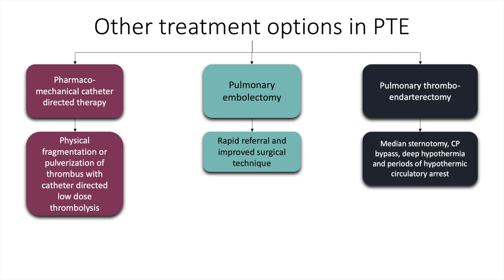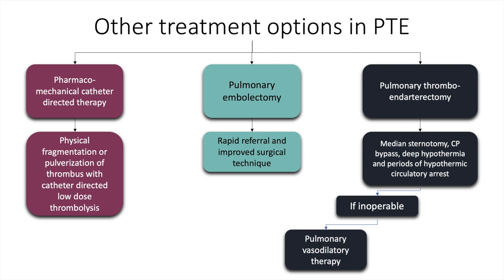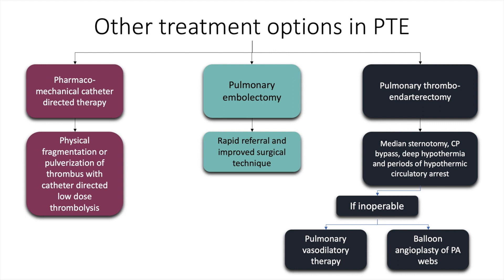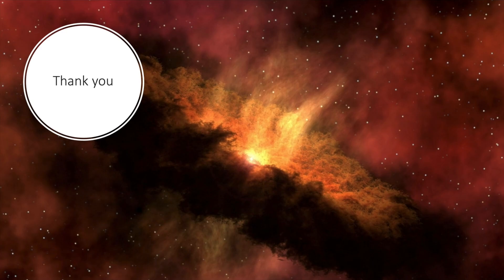If the patient is inoperable, pulmonary vasodilator therapy or balloon angioplasty of pulmonary arterial webs may be undertaken. That's it for our presentation on pulmonary thromboembolism. Thanks for watching and we will see you in the next video.